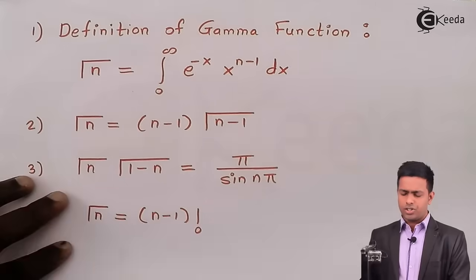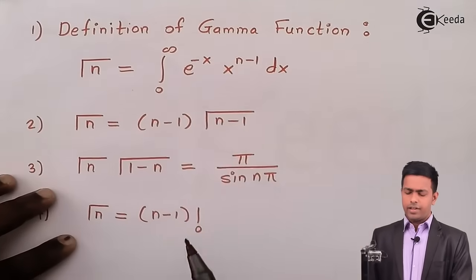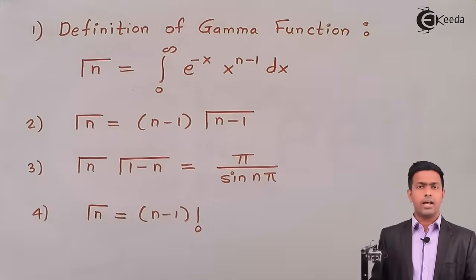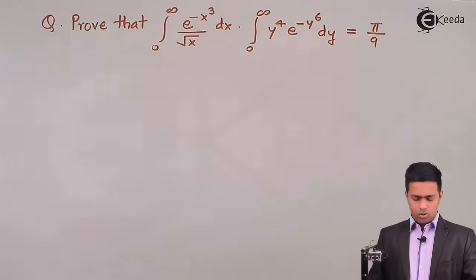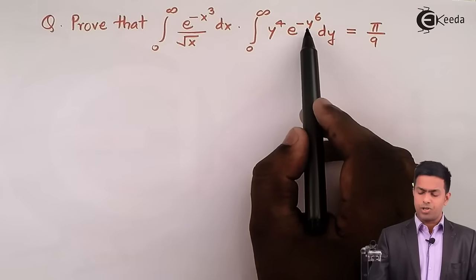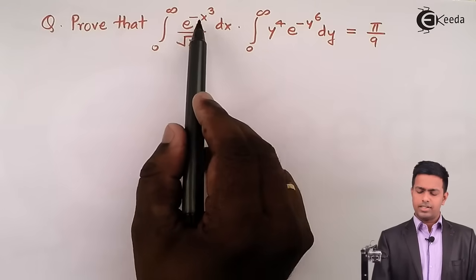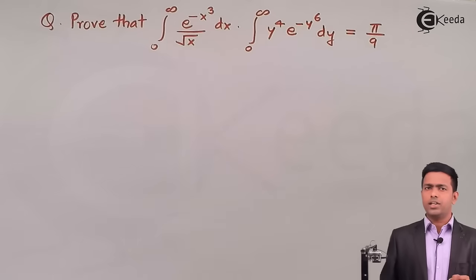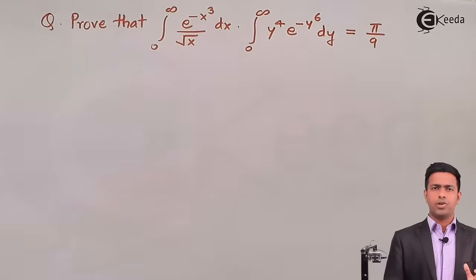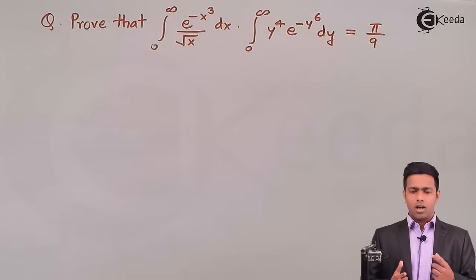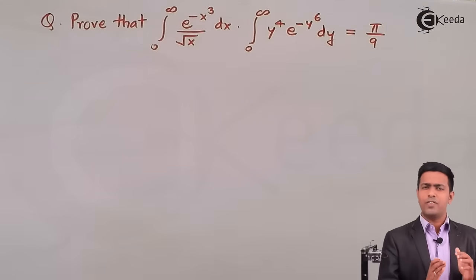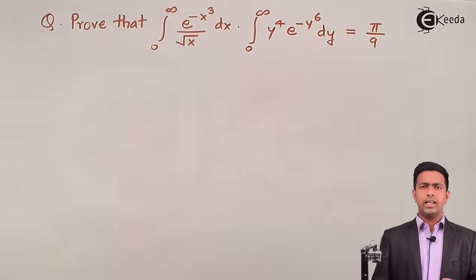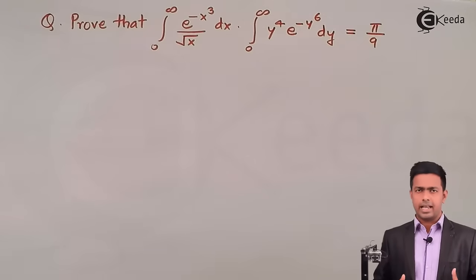Our aim is to convert the given question into the form of the gamma function definition, then apply it as Γ(n). The first term should be exponential with power −x (or −y if integrating in y), and the second term must be algebraic as x raised to some constant. Then we can apply the definition of the gamma function.